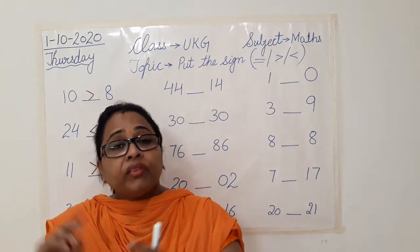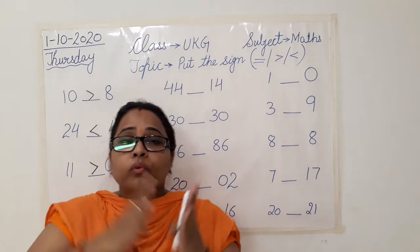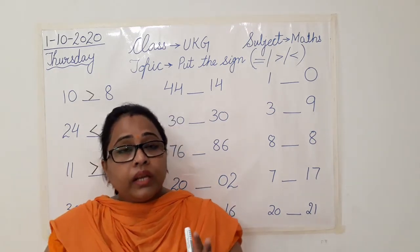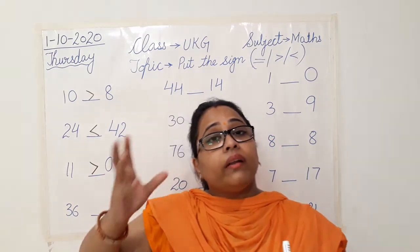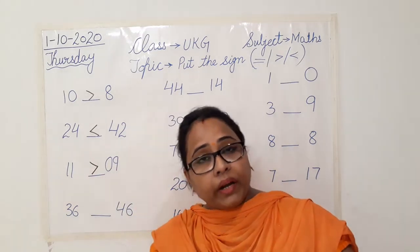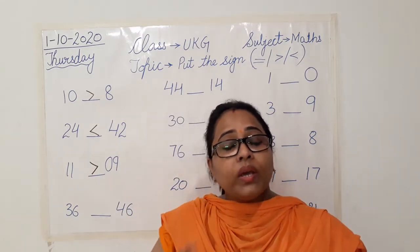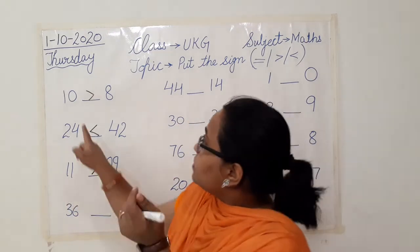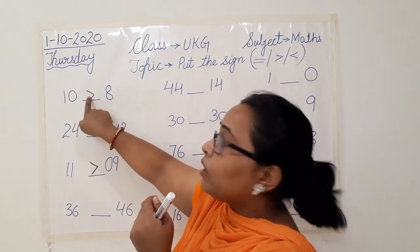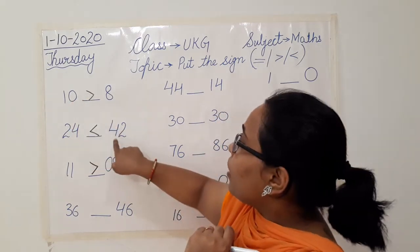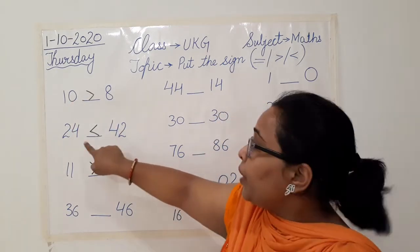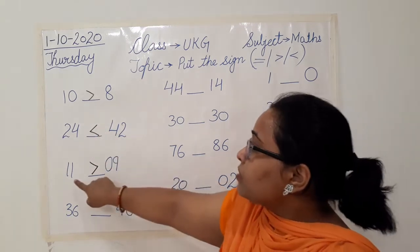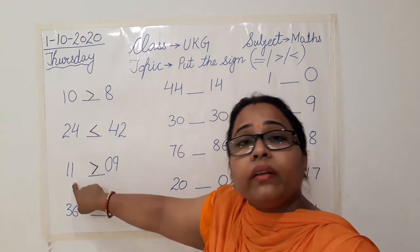Always remember: if the numbers are different, you will see which is the greater number. Whichever number is greater, always put the sign opening the mouth towards the greater number. Ten was big — the mouth opened towards it. Forty-two was greater than twenty-four — so the mouth opened towards it. Then eleven was greater than nine — the mouth opened towards eleven.